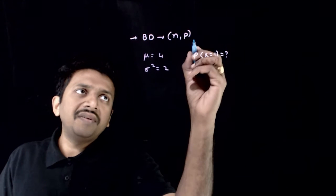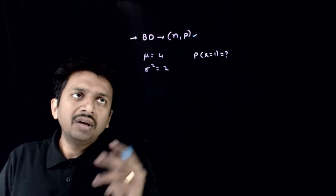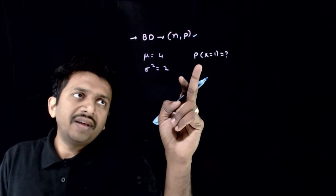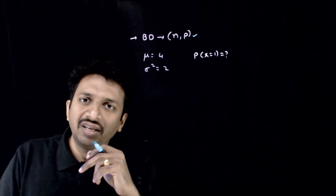Welcome students. In this question, you are given that you have a binomial distribution whose mean and variance are 4 and 2. If that is so, what is the probability that x is equal to 1?